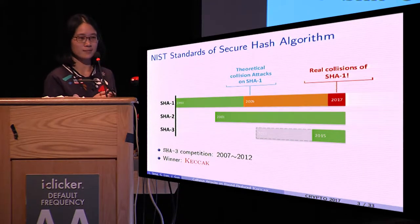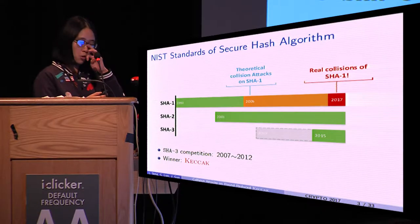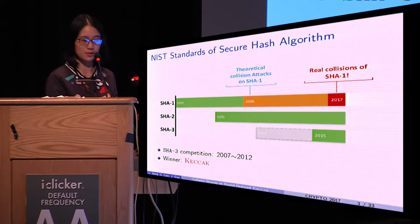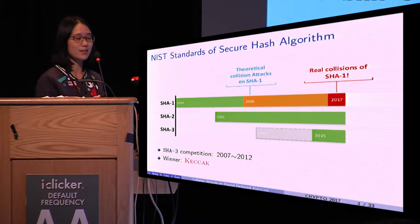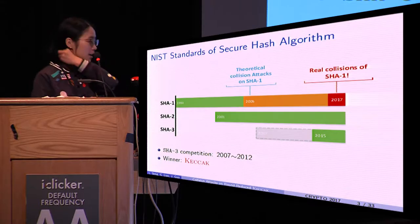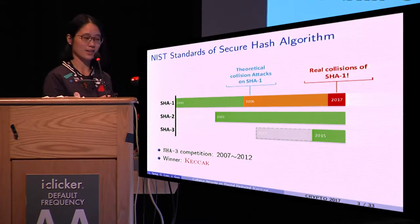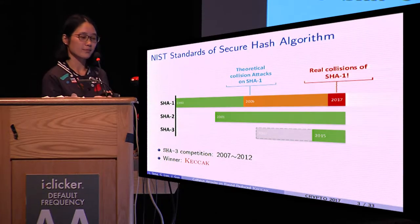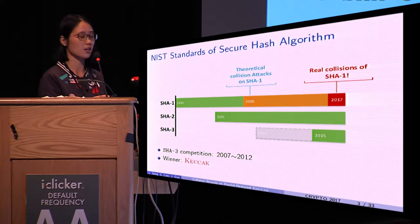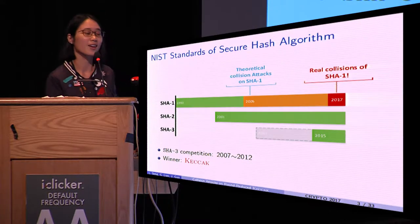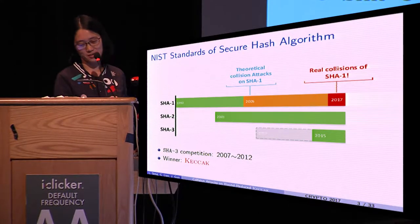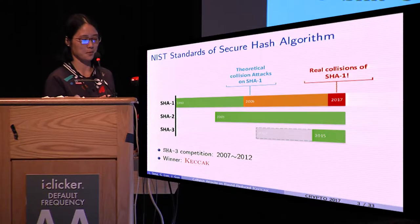Hash functions are an important type of primitives used in cryptosystems. The most widely used hash functions are the SHA family. The first member of this family is SHA-1. However, its theoretical collision attacks were found in 2005, while its real collisions were found early this year, which is another milestone.